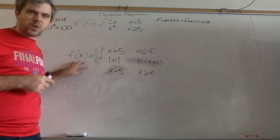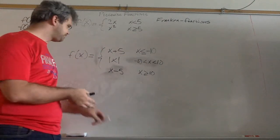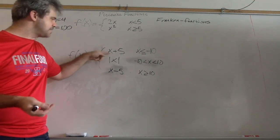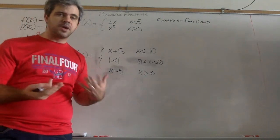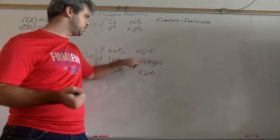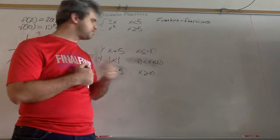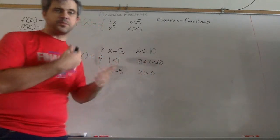Let me do a scarier one. This one's scary because it's got three different things, but it's the same concept. So we've got three different rules here: x plus 5, absolute value of x, and x minus 5. We'll use the first one when x is less than or equal to negative 10, this one when x is between negative 10 and 10, and this one when x is bigger than 10.